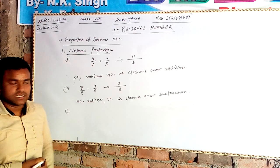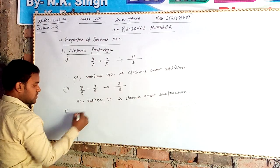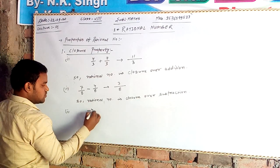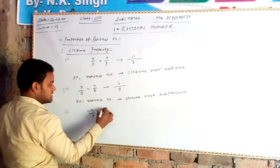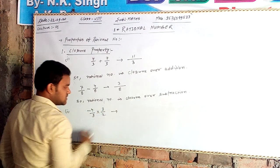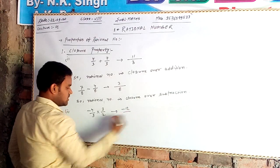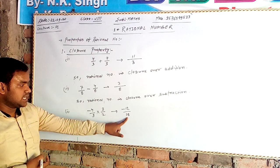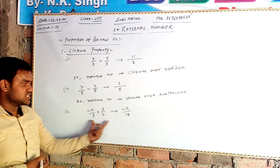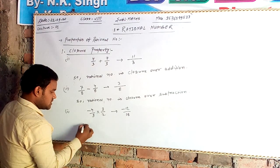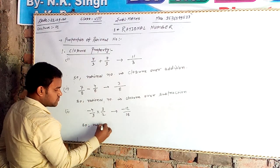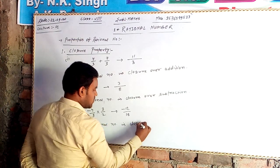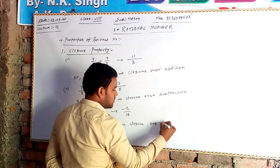What about multiplication — does it follow closure property? For example, minus 4 by 9 into 3 by 2 gives minus 12 by 18, which is in the form of P by Q. So it is also a rational number. The product of two rational numbers gives a rational number, meaning rational numbers show closure property over multiplication.